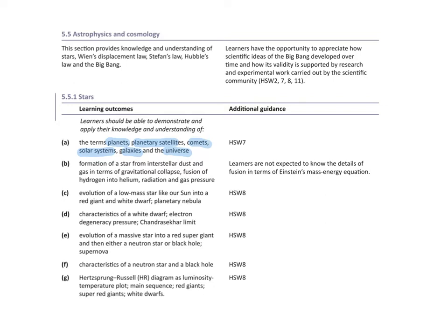It's quite simple at this stage. Then we're going to be looking at the formation of a star in terms of some key terms that you need to know: interstellar dust, gas, gravitational collapse, fusion, radiation and gas pressure. These are the words that we will see a lot.